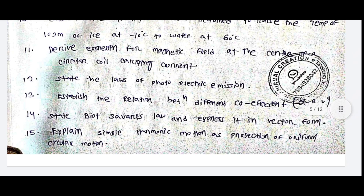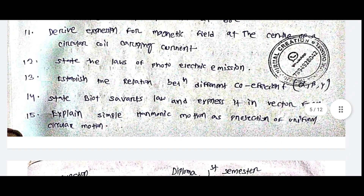Derive the expression for the magnetic field at the center of a circular coil-carrying conductor. State the laws of photoelectric emission. Establish the relation between different coefficients alpha, beta, and gamma.